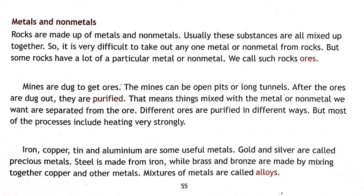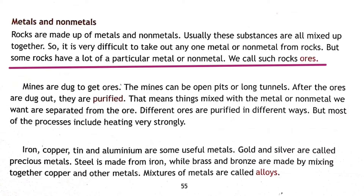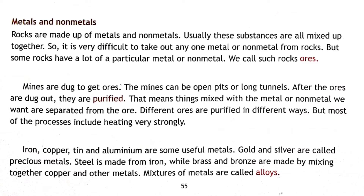Next we are going to learn about metals and non-metals. We get metals and non-metals from the rocks present in the earth — rocks are made up of metals and non-metals. Usually these metals and non-metals are all mixed up together, making it difficult to separate any one kind. But there are some rocks which have only one particular kind of metal or non-metal, and such rocks are called ores.